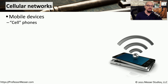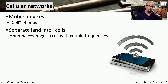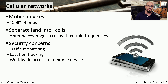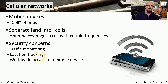Another popular wireless network type is the cellular network that we use for our mobile devices or cell phones. The cellular network towers separate the network into individual cells, and each antenna uses a different set of frequencies for each cell of the network. There are some security concerns associated with cellular networks. On some cell networks, you might have the ability to monitor the traffic being sent between the mobile device and the cellular tower, and there may be location tracking functions so that someone can know exactly where you are based on the signal you're sending to these cellular towers.